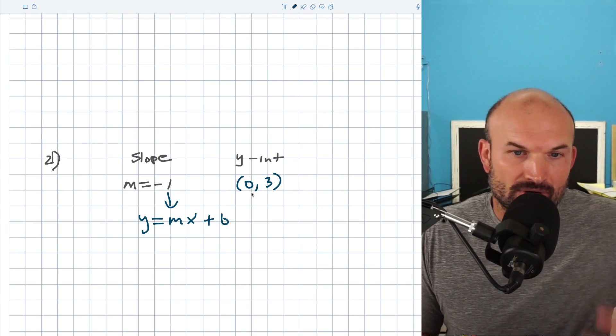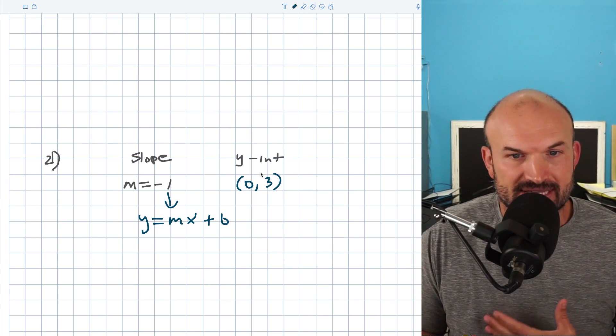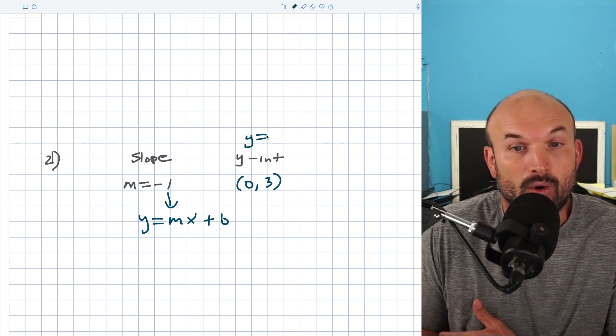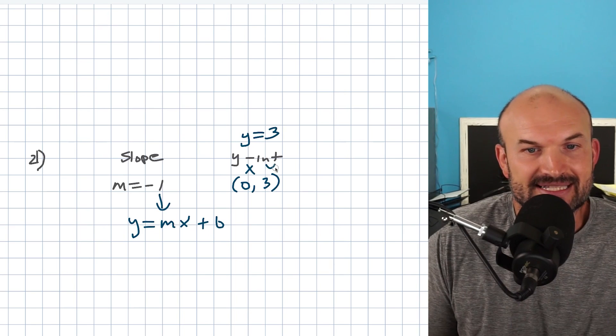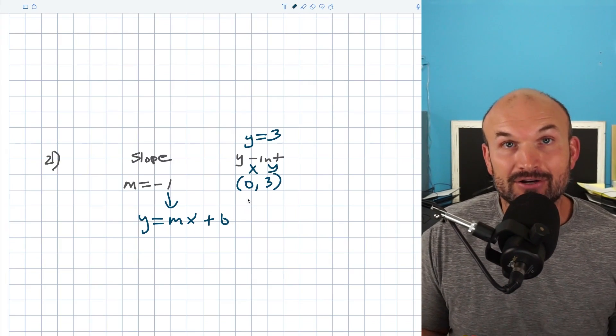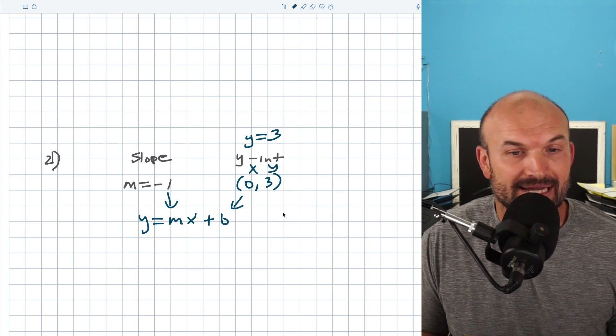This represents that. So now we just need to understand, well then what is the value? Like (0, 3) is really the same thing as saying y is equal to 3, right? Because remember, this is a coordinate point. That's an x and a y. So the y-coordinate is equal to 3. And remember, the y-coordinate of the y-intercept is the same thing as your b. So I'm going to plug 3 in for b.